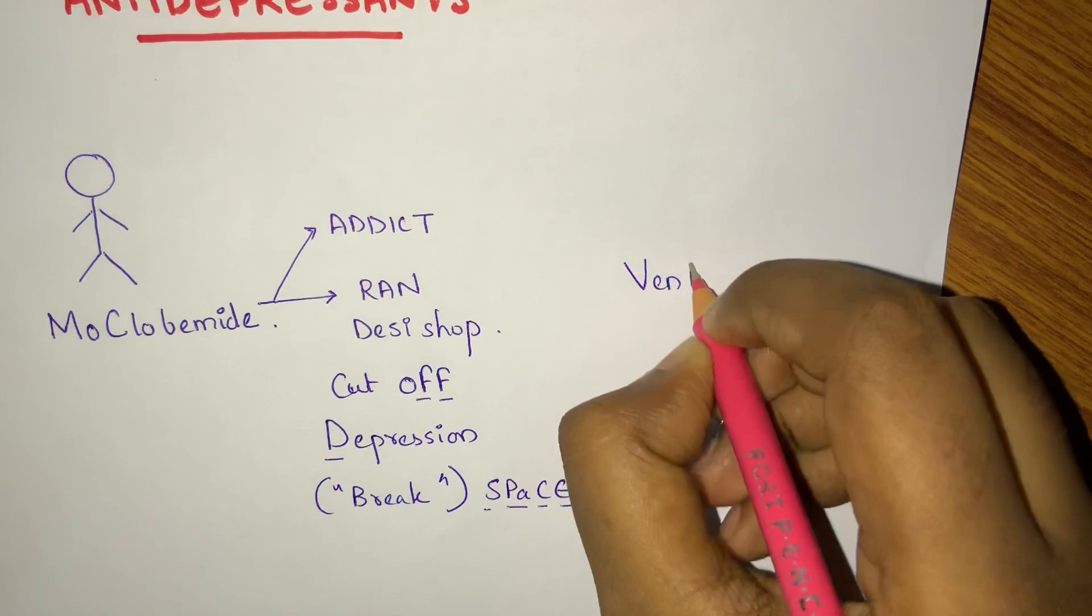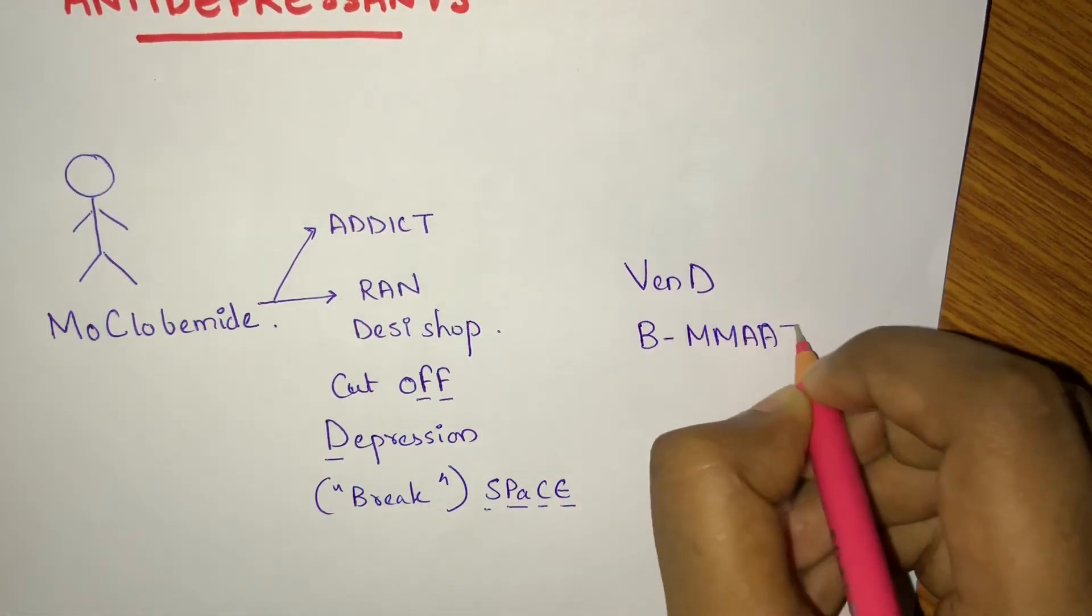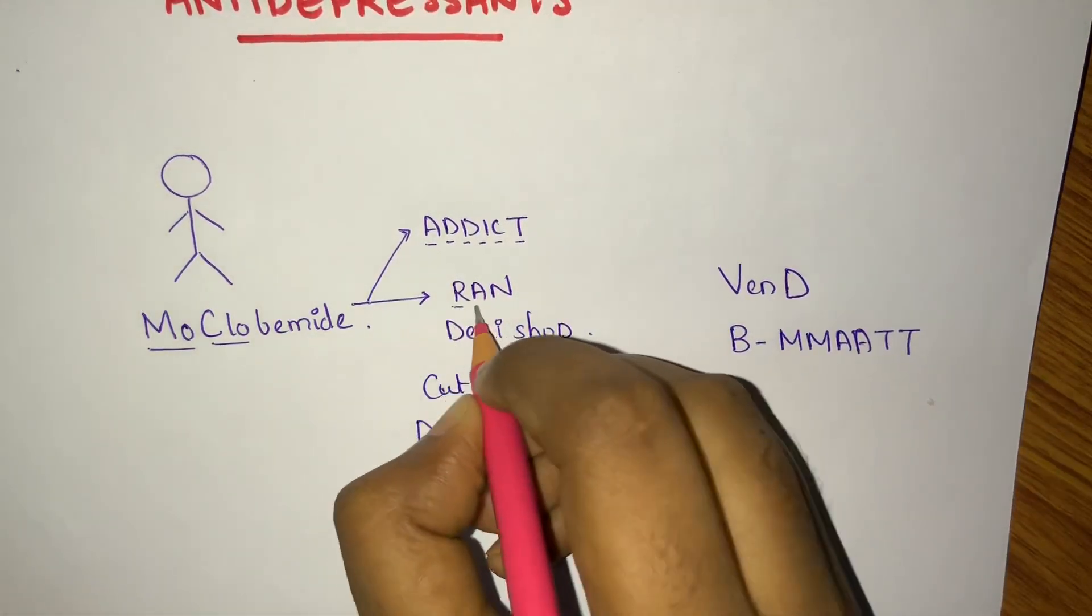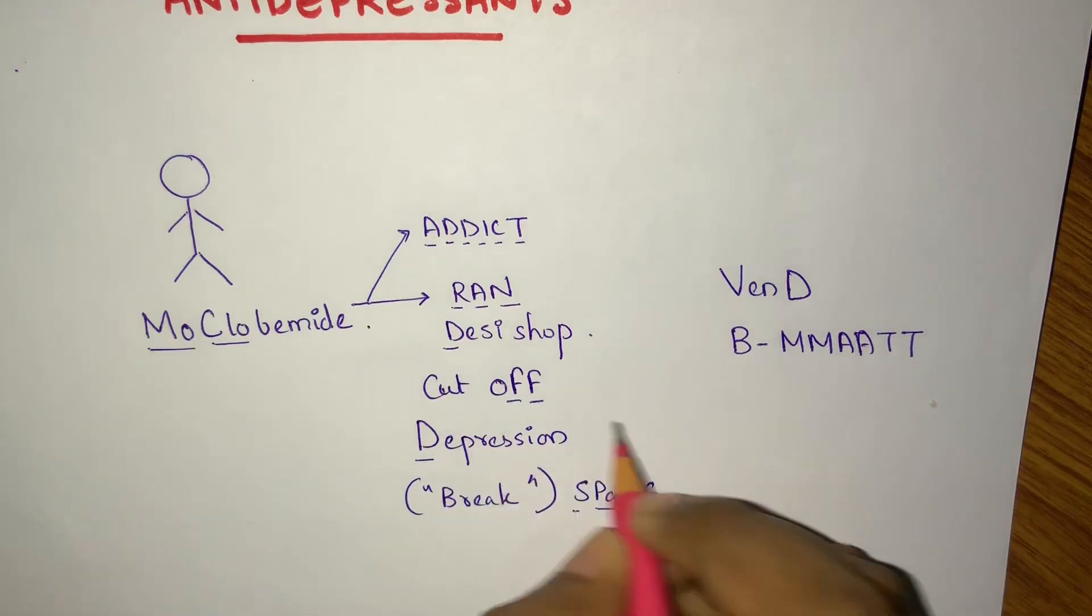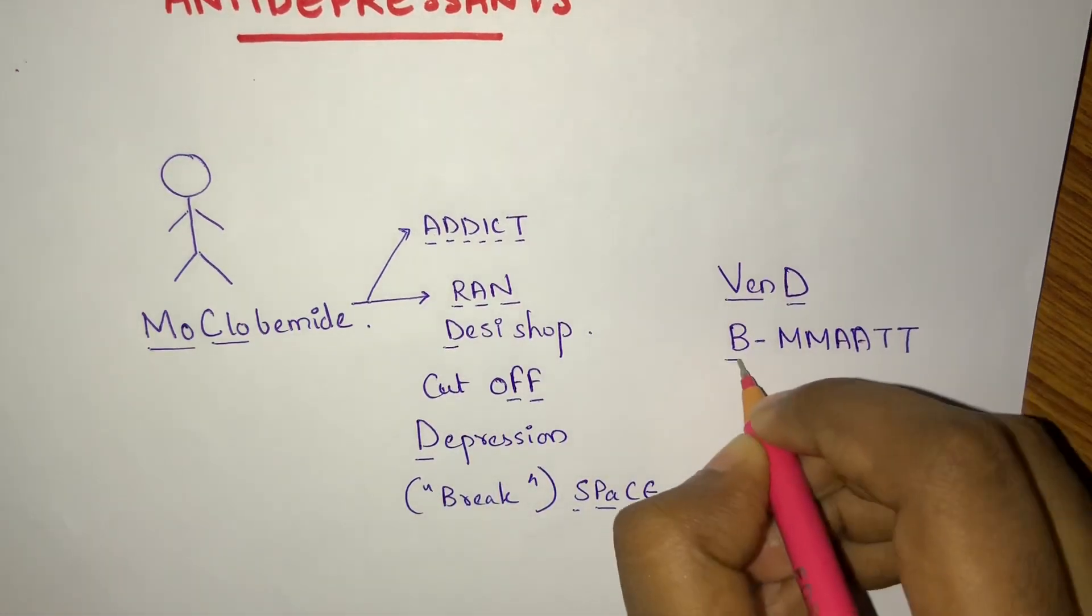So he came up with a solution. He began to vent be mad. So Mooglobimide was an addict, he ran a desi shop, he became cut off, depression, then he wanted space, then he began to vent be mad.